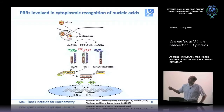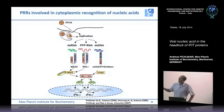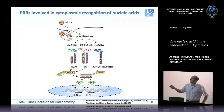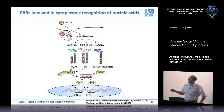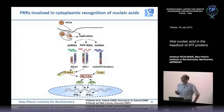Each pathway requires a different set of pattern recognition receptors linked to different types of substrates. Long double-stranded RNA activates MDA5. 5' triphosphate RNA activates RIG-I. More recently, sensors of DNA can activate downstream signaling either by directly engaging IRF3 or by generating a second messenger molecule that activates a protein called STING.